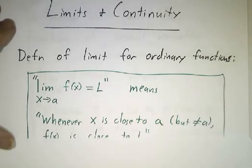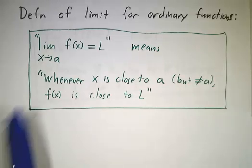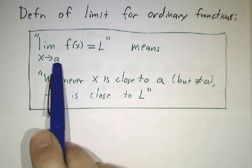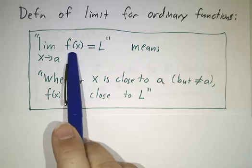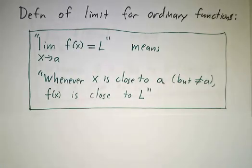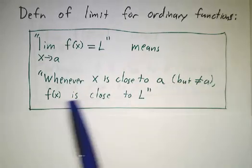So for ordinary functions, the definition of a limit was this. When we say the limit as x approaches a of f is L, what we're saying is that whenever the input is really close to a, the output is really close to L. So whenever x is close to a but not equal to a, f is close to L.